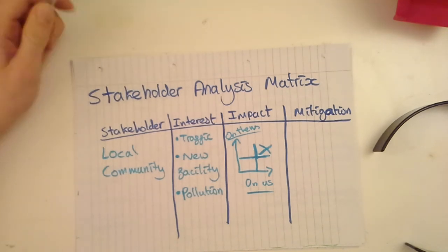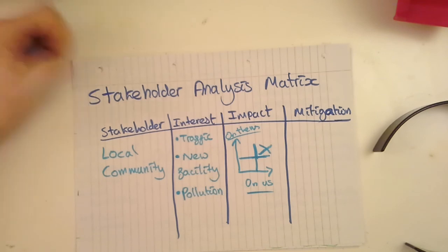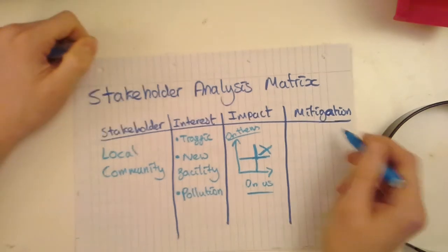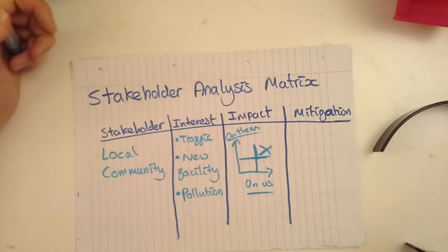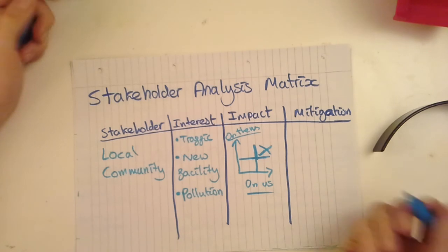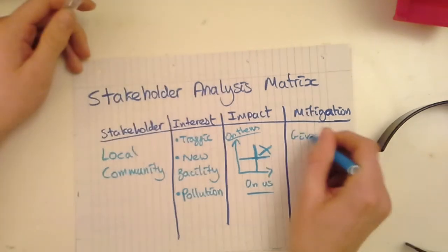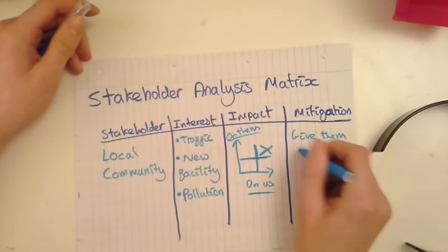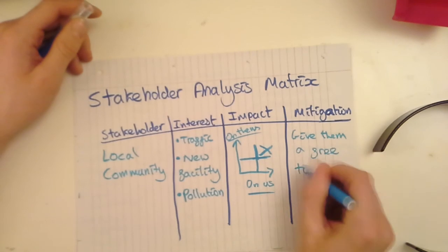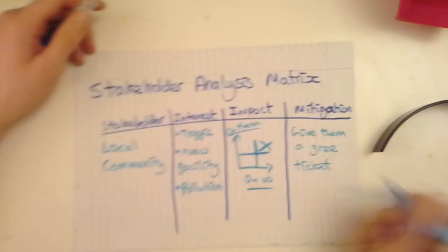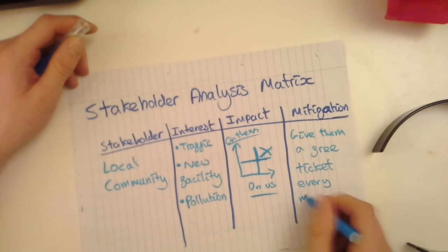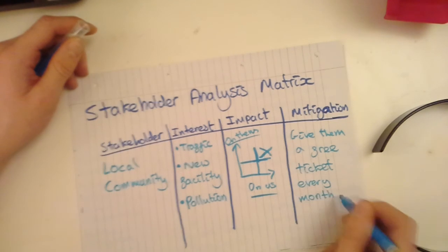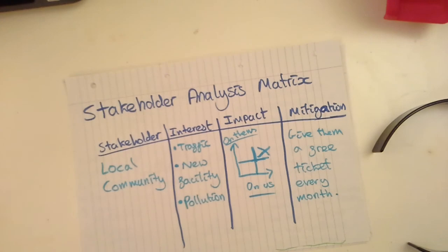Since we're having a lot of negative effects on them, we might want to mitigate this and make them happy. So this is what we could do to reduce our impact — we might give them a free ticket every month to a game of their choosing. They can come along and watch a game every month, and hopefully this should keep them happy.